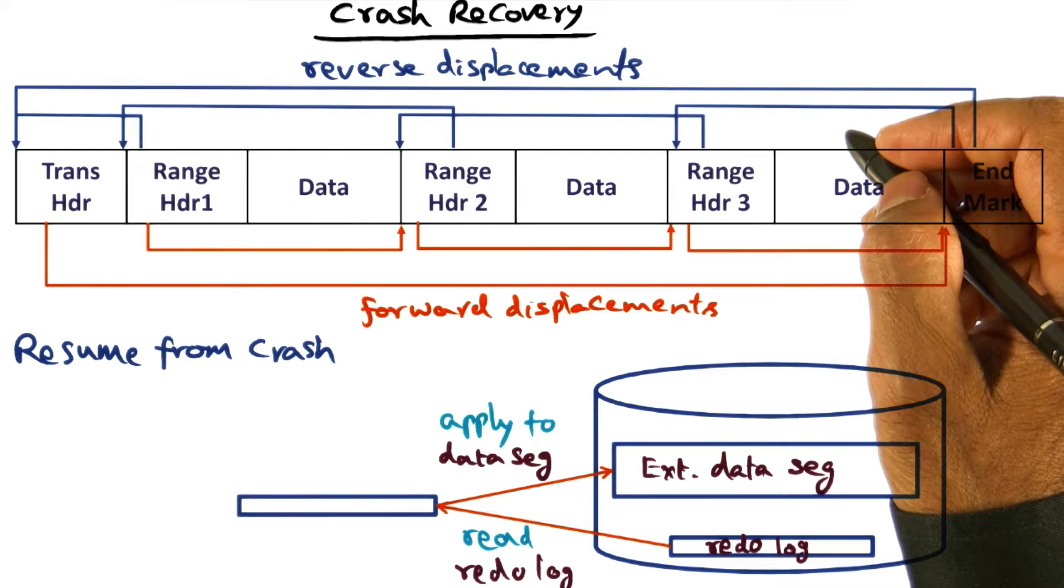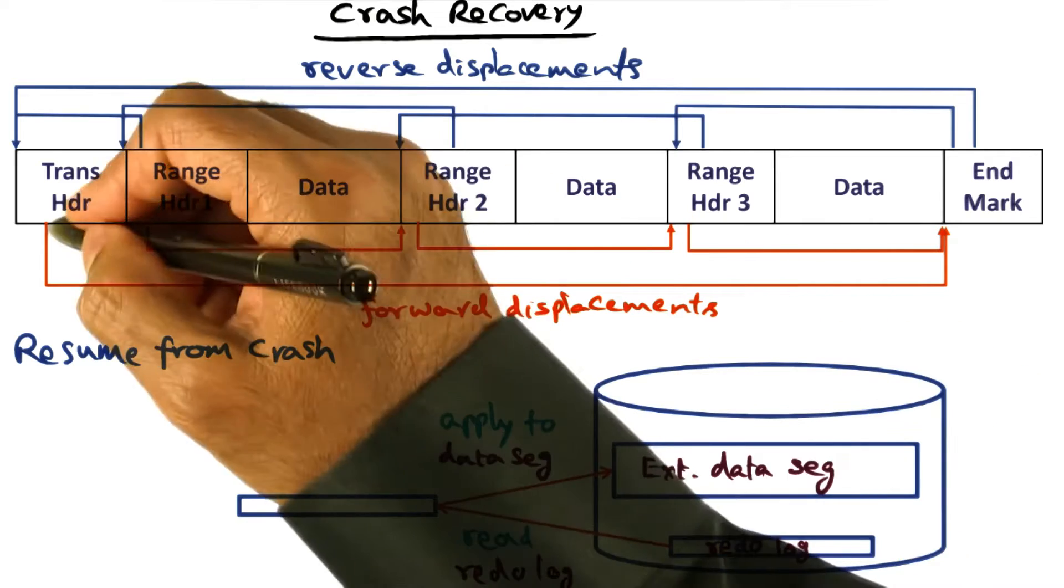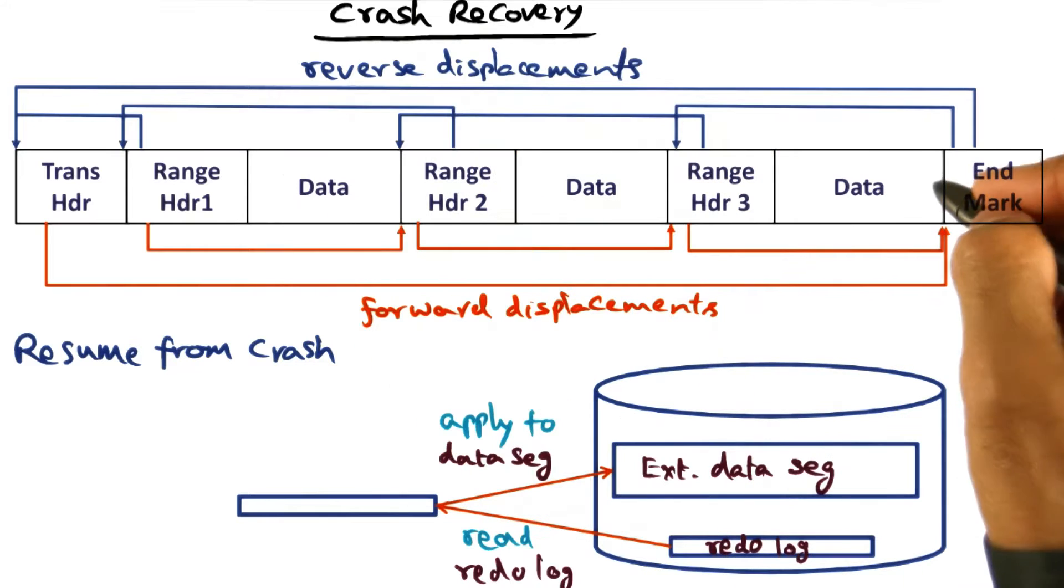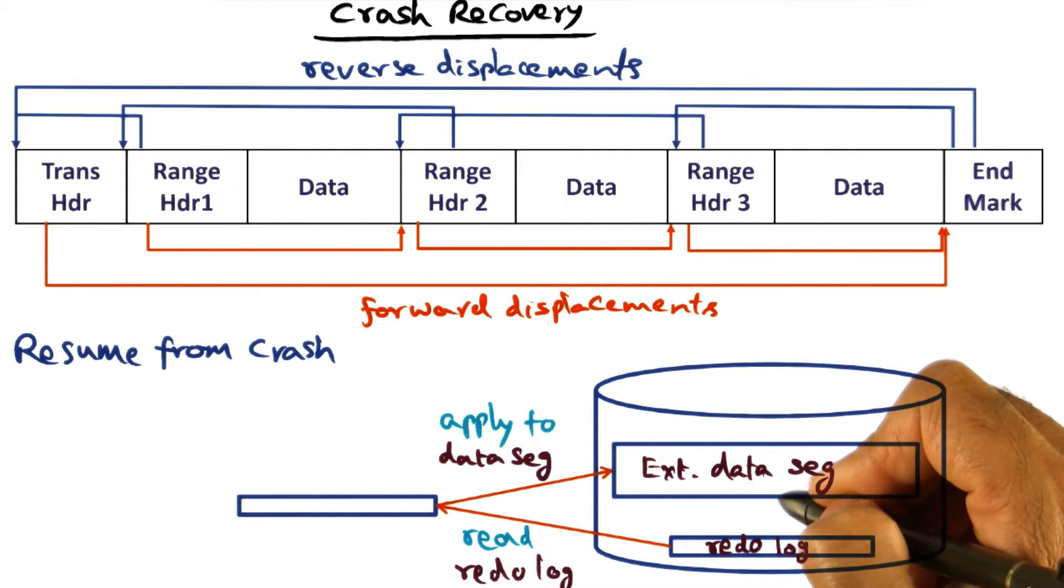Now, when we resume from the crash, what we need to do is make sure that the external data segments are updated with all the changes that have been made and recorded in the redo log, but have not yet been applied to the external data segments.